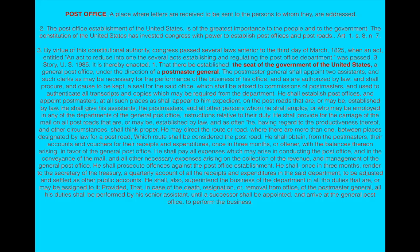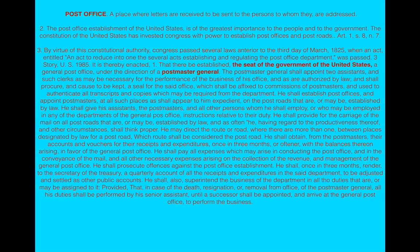By virtue of this constitutional authority, Congress passed several laws anterior to the third day of March, when an act entitled 'An Act to Reduce into One the Several Acts Establishing and Regulating the Post Office Department' was passed. It thereby enacted that there be established, at the seat of the government of the United States, a general post office under the direction of a postmaster general. When you realize that the post office is the seat of government and the postmaster general is the head of that, you will know who the government is.